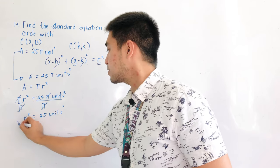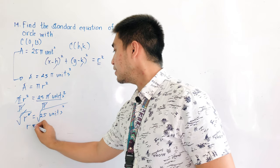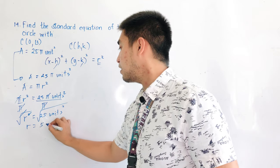Get the square root of both sides. Therefore, r is equal to what is the square root of 25? That becomes 5 units.